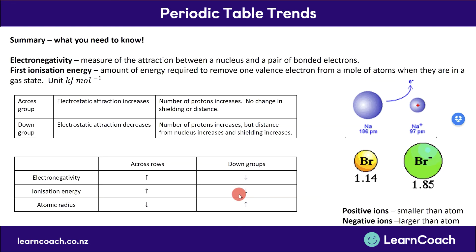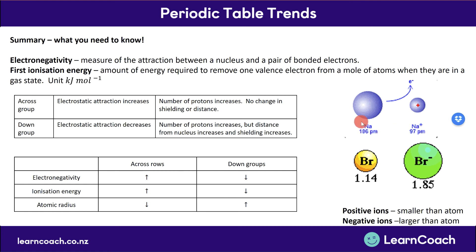To summarize: electronegativity is the measure of attraction between a nucleus and a pair of bonded electrons — how much an atom likes to hold on to its electrons. First ionization energy is how much energy is required to remove a valence electron from a mole of atoms in gas state. A high electronegativity means a high ionization energy — it's hard to take electrons from something that holds them tightly. Finally, positive ions are much smaller than their atoms, and negative ions are much bigger than their atoms.